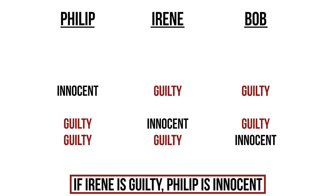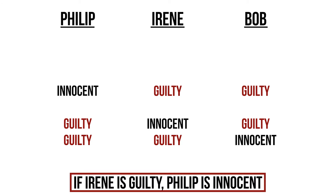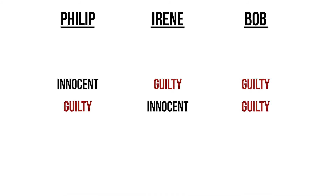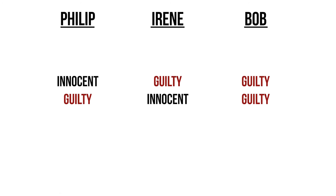Lastly, we know that if Irene is guilty then Philip is innocent, so we eliminate the option in which Irene is guilty but Philip is also guilty. We are now left with two possible situations. From this we can only conclude that Bob is guilty — surprise, surprise.